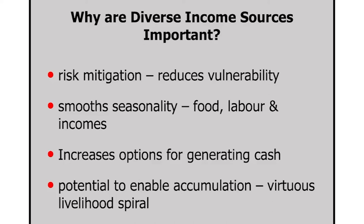Why is this diversity of income sources important for households? The first thing is about reducing risk and vulnerability — if you're only dependent on farming and there is a cyclonic storm, flood or drought, then everything is gone. But if you have been able to diversify, it reduces your risk somewhat. It also smooths seasonality in terms of food, labour and incomes. In agriculture, paddy is planted in June-July and harvested by October-November, so in between you won't have any source of food — having an outside source of income helps you smooth over this period until the harvest comes.